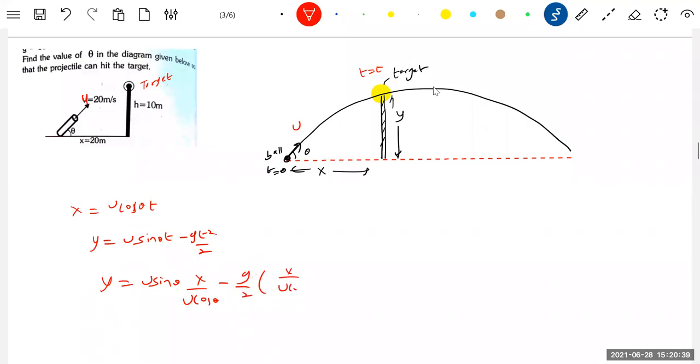t is what? x by u cos theta. So y equals x tan theta minus gx square by 2 u square cos square theta.